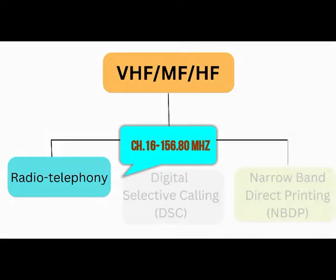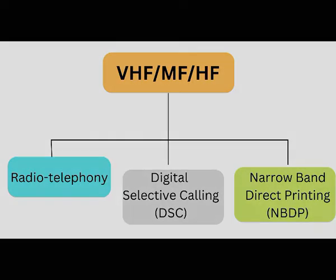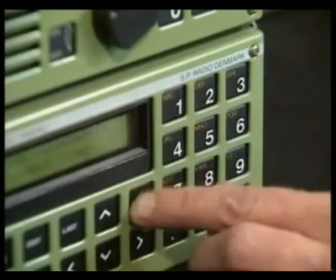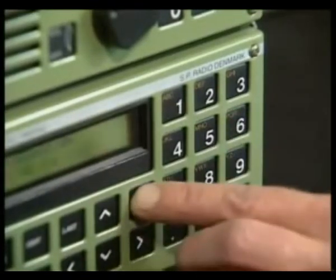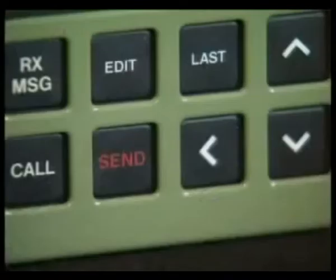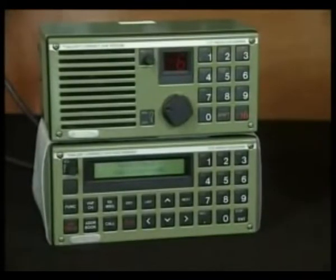The third mode is NBDP — Narrow Band Direct Printing. Just like we used to send SMS on old mobile phones, in a similar format, radio equipment uses NBDP for communication. There is no NBDP in VHF; it is found in MF and HF. Usually your MF and HF will be integrated as one system, and it will have an attached keyboard so you can type messages and send them to your designated target.